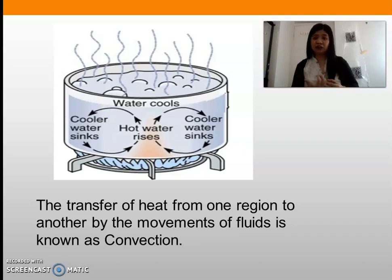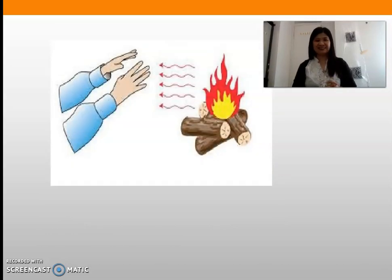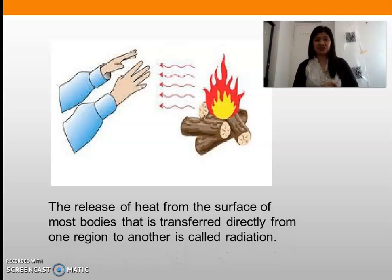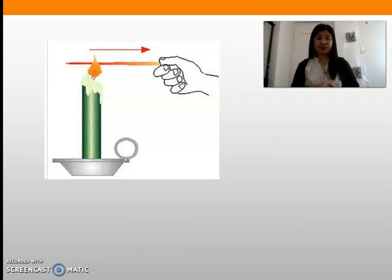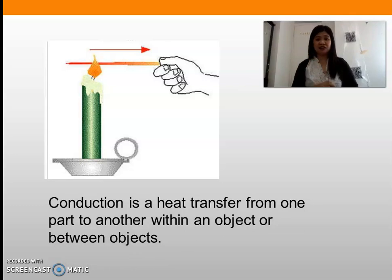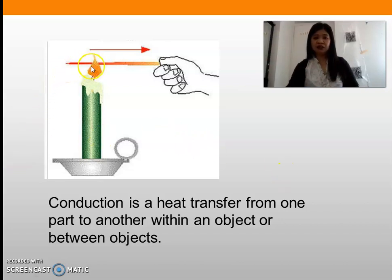Next, what do you call this transfer of heat? This one is radiation — the release of heat from the surface of most bodies that is transferred directly from one region to another is called radiation. And before we had an experiment about this: the last one is conduction, when heat transfers from one part to another within an object or between objects. If one part is heated, the heat will transfer to the other part, especially if it is metal.